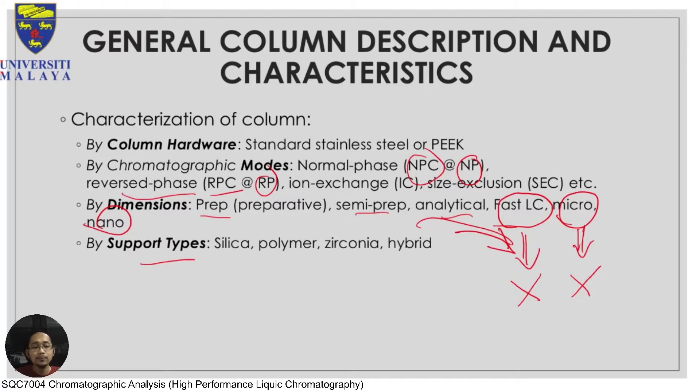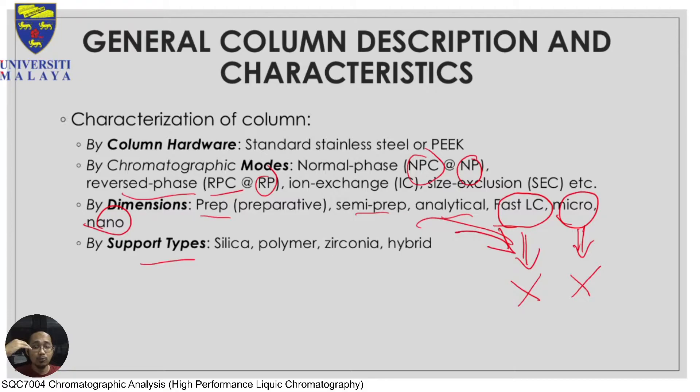The fourth characteristic is support types — the material inside the column itself. You can have silica, polymer, modified silica, zirconia, or a hybrid combination. There are so many different types that covering all the chemistry would take another week. We will just look at the general terms about support types.